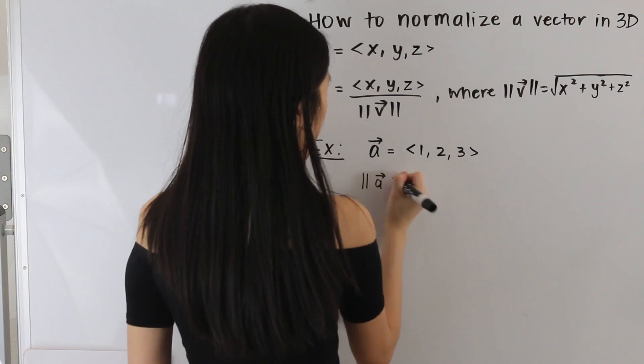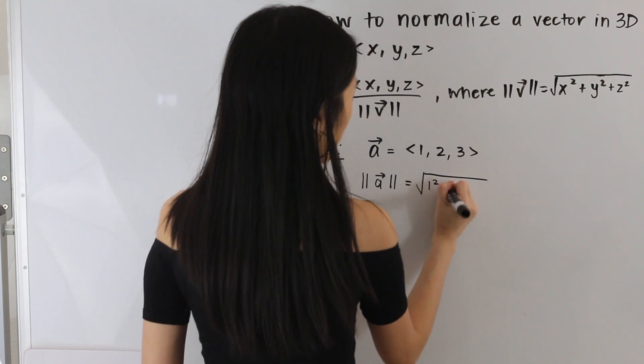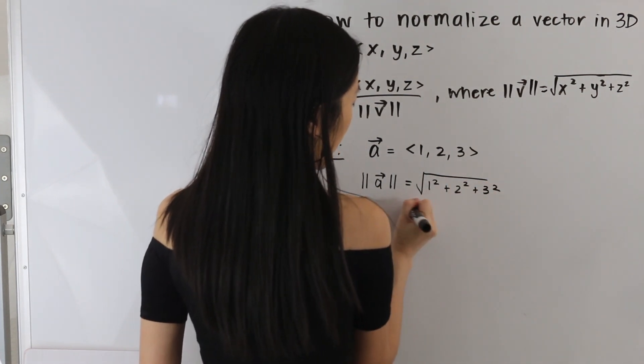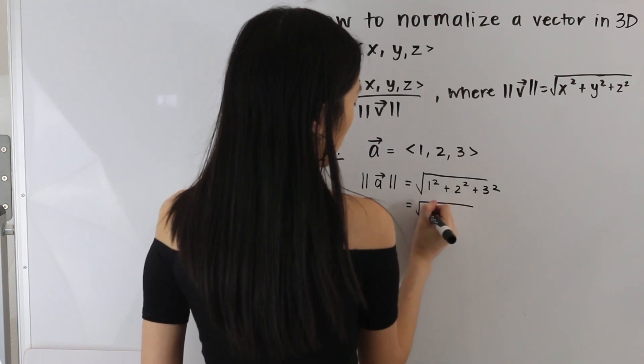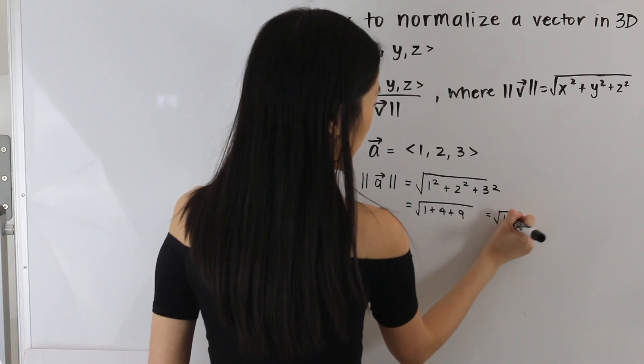So the magnitude of a is the square root of 1 squared plus 2 squared plus 3 squared. And simplifying this we get 1 plus 4 plus 9. So this gives us the square root of 14.